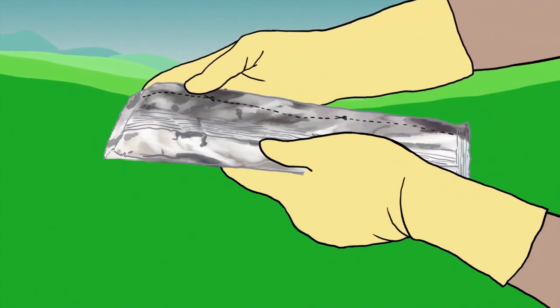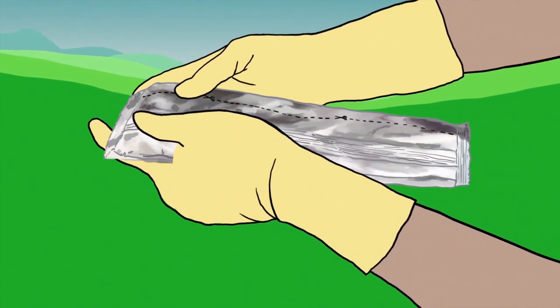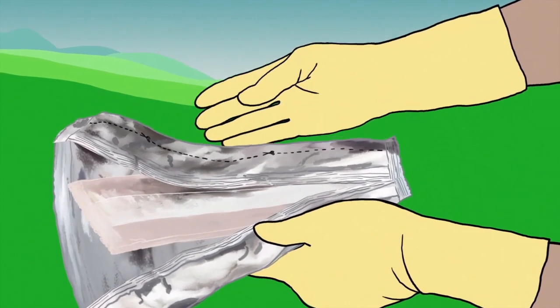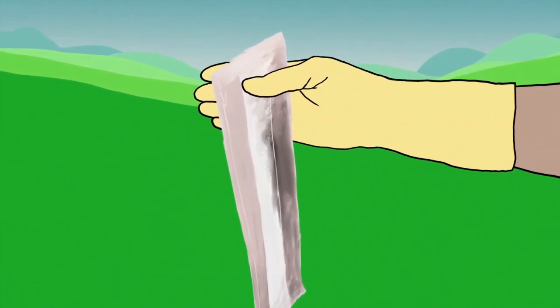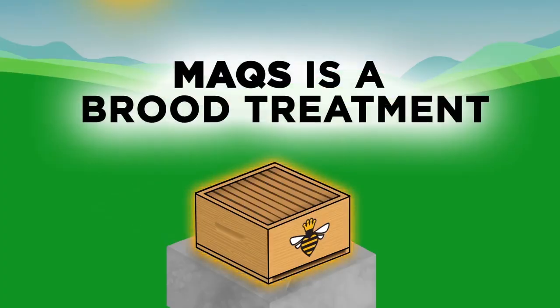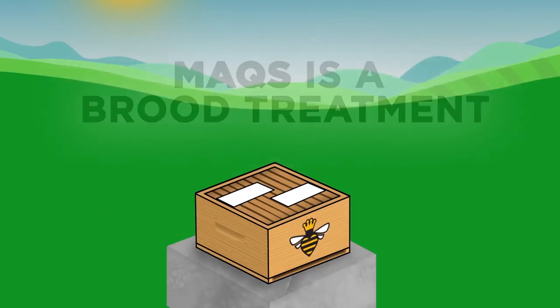MiteAway Quick Strips has two convenient treatment options available. Option one is the full dose. Remove the two strips from the foil sachet. Carefully separate the strips. Do not remove the paper wraps. For hives with single brood chambers, lay two strips across the top bars of the frames of the brood chamber, staggering them so they lie flat and across the full width of the hive body.